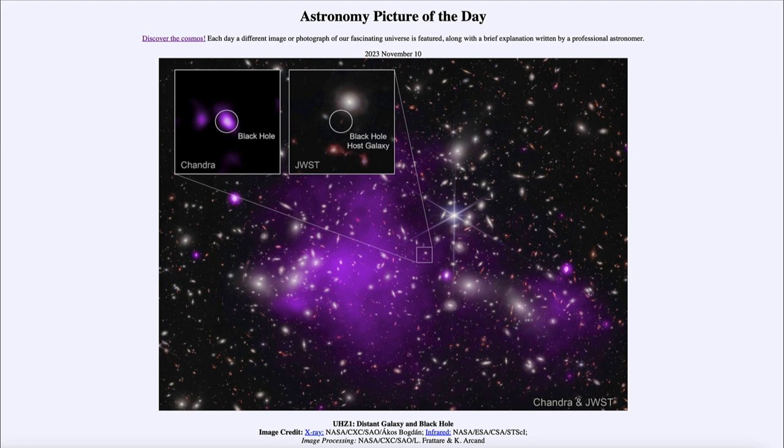However, what we're looking at is something even further beyond that, and that is the galaxy at the center there that is highlighted with the little square around it. That is UHZ1, the name of this galaxy, and it is at an extremely great distance, in fact a distance of 13.2 billion light years.